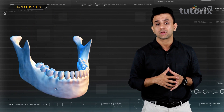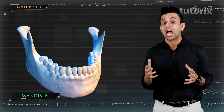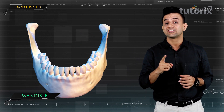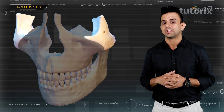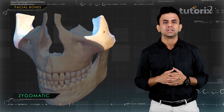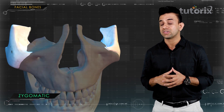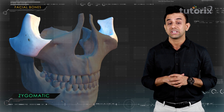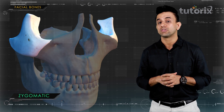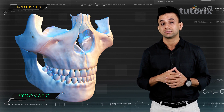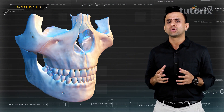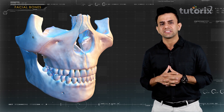The bones forming the upper jaw are the maxillae, which are paired and unite to form the upper jaw. The mandible forms the lower jaw bone and is solitary — only one in number — and is the strongest facial bone. The zygomatic bones are also called the cheek bones because they form the prominence of the cheeks. They are also present in the lateral wall and the floor of each orbit.